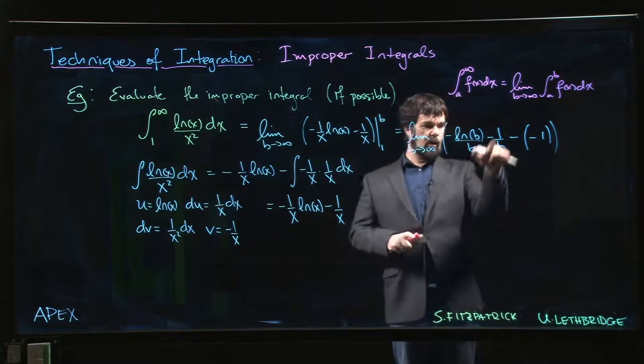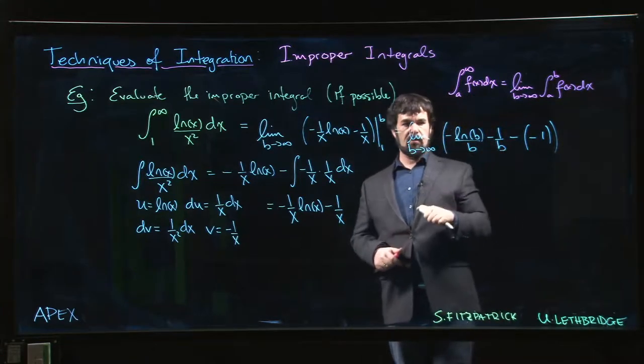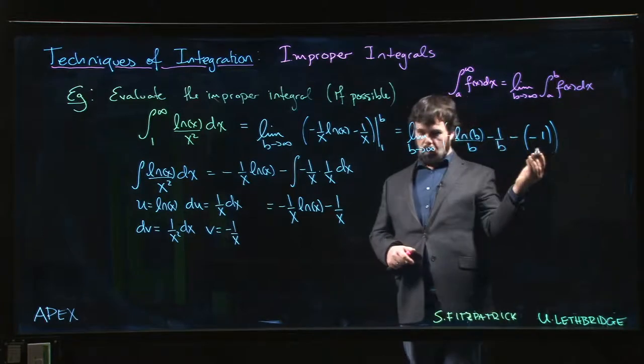So we know what happens to 1 over b as b goes to infinity. That's going to go to 0. That's just 1.